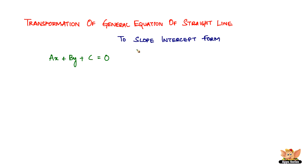For that, we need to know what exactly is the slope-intercept form. The slope-intercept form is given by y equal to mx plus c, where m is the slope and c is the intercept, and x and y are the points that lie on that particular straight line.